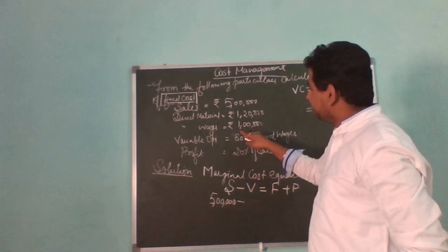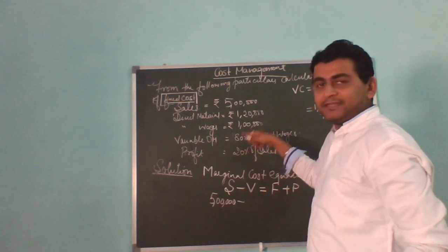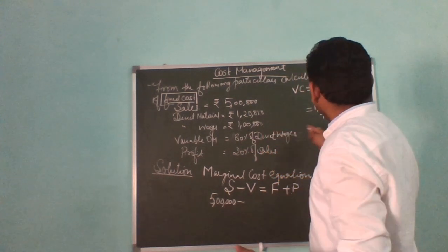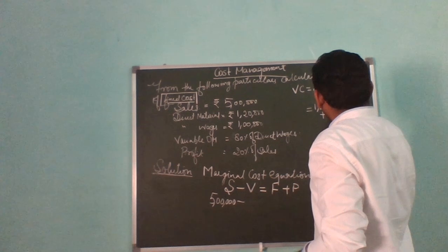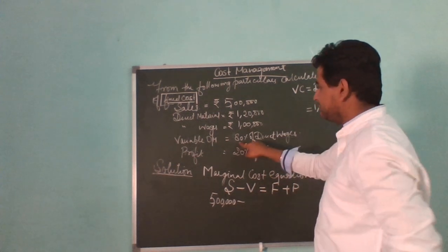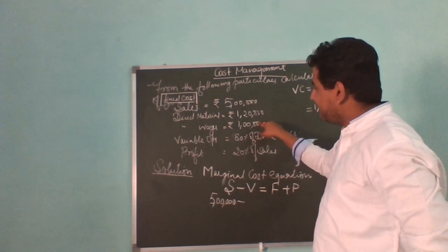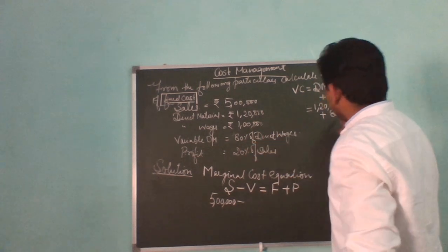Obviously variable overheads is 80,000 rupees because 80% of one lakh equals 80,000 rupees.